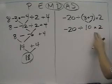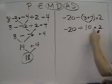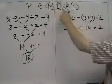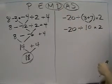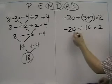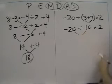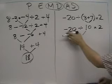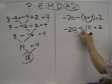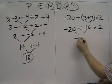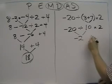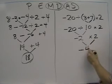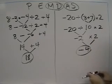So now we have negative 20 divided by 10 times 2. What are we going to do next — the division or the multiplication? Well, even though the M comes before the D in PEMDAS, since the division is on the left in this problem, we're going to divide next. Negative 20 divided by 10 is negative 2, times 2. So the final answer here is negative 4.